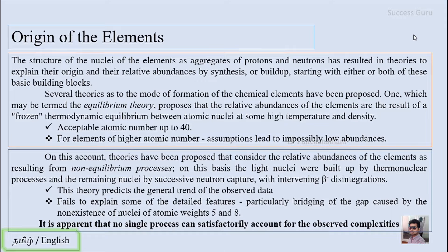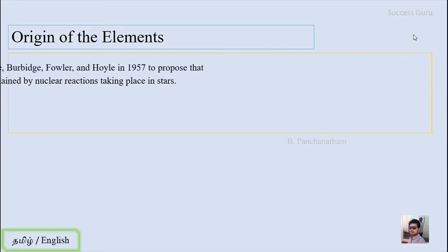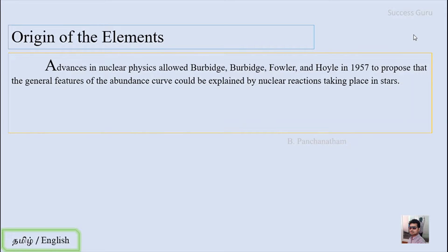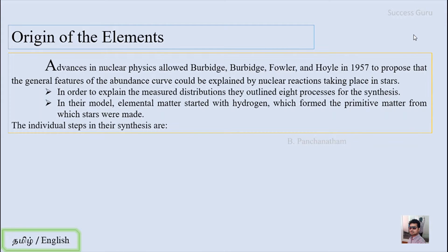It is apparent that no single process can satisfactorily account for the observed complexities. Advances in nuclear physics allowed Burbidge, Burbidge, Fowler, and Hoyle in 1957 to propose that the general features of the abundance curve could be explained by nuclear reactions taking place in stars. To explain the measured distribution, they outlined eight processes for synthesis in their model. Elemental matter starts with hydrogen, which formed the primitive matter from which stars were made.